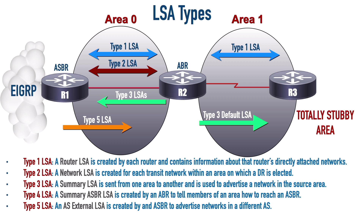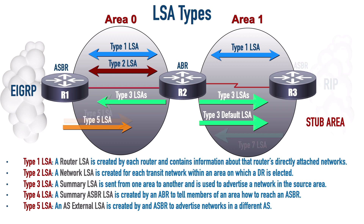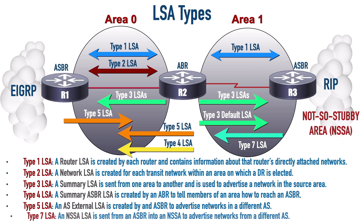Now we're sending a single default Type 3 LSA into Area 1 saying: if you don't have it in your area, go here. But let's take this concept a step further. Let's go back to where we had a stub area - we're sending individual Type 3 LSAs from Area 0 into Area 1. Let's say we had a stub area, and then there was another company merger, and R3 connected to a network running RIP as its routing protocol. Now R3 has become an ASBR, and this previously stub area is no longer very stubby. In fact, it's literally called a not-so-stubby area, or NSSA for short.